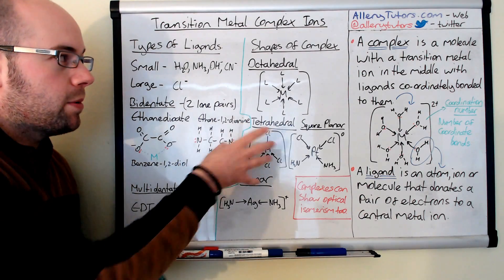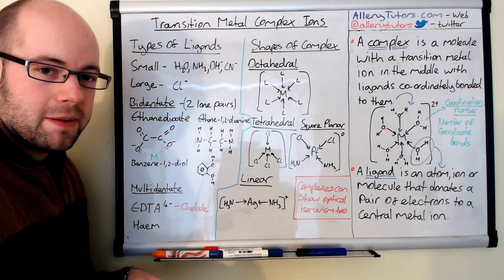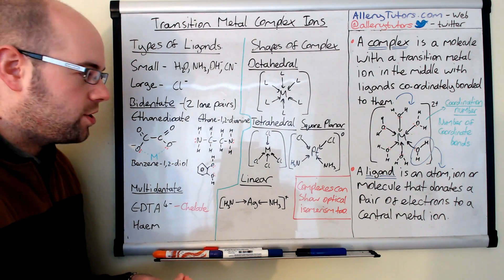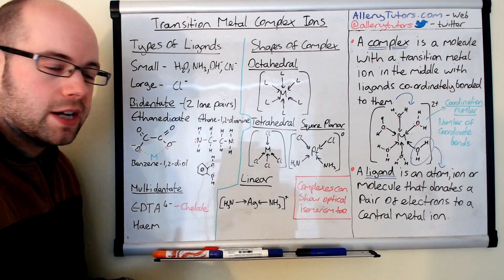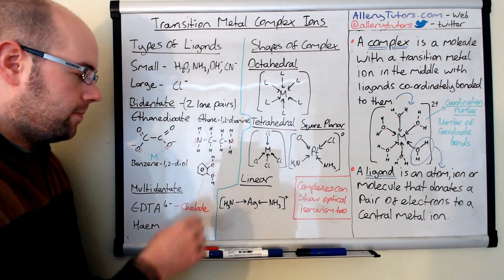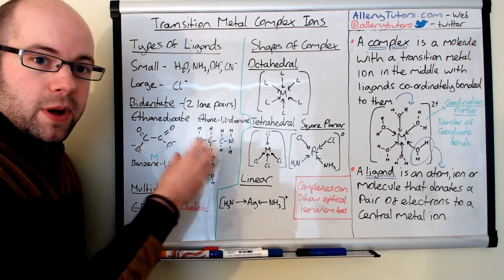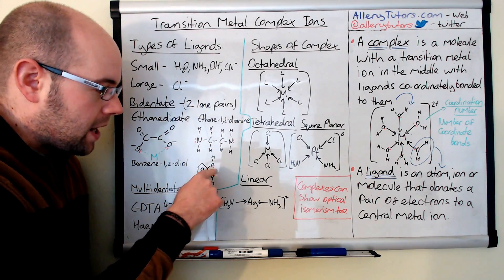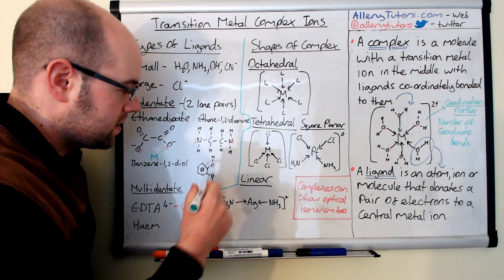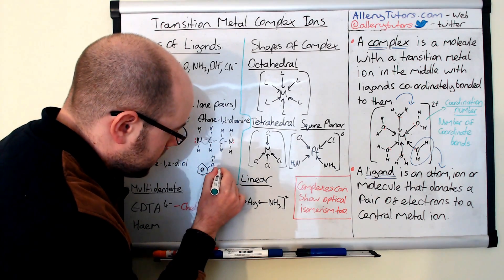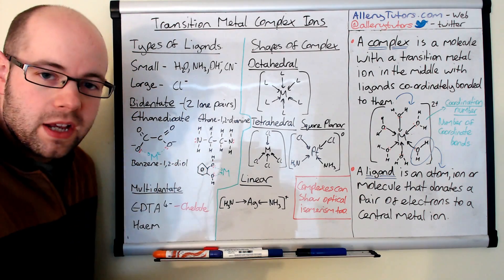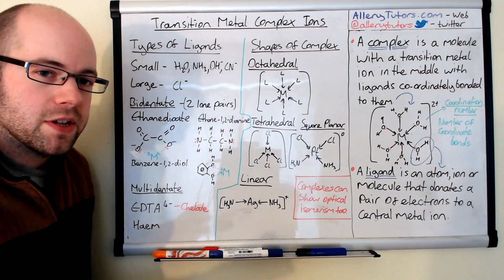Another bidentate ligand is ethane-1,2-diamine — ethane in the middle with NH2 amine groups either side, with lone pairs available, so it can bond twice. And another is benzene-1,2-diol, a benzene group with two alcohol groups, with a lone pair on each oxygen so it can also bond twice to the metal ion. These are all large ligands, larger even than the large monodentate ligands.